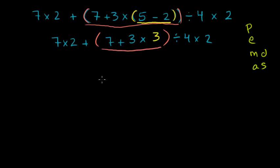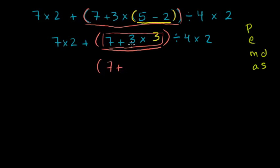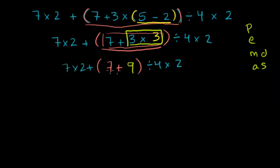So how would you evaluate 7 plus 3 times 3? Look back to your order of operations. We're inside the parentheses now, so inside of it there are no longer any parentheses. There are no exponents either. There is multiplication, so we do that before we do any addition or subtraction. We want to do 3 times 3 before we add the 7. So this becomes 7 plus 9 — doing the multiplication first — and that's in the orange parentheses. 7 plus 9 is 16.